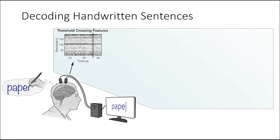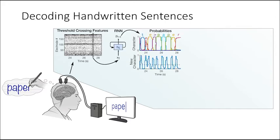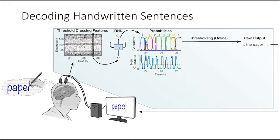Here's how our decoder works. We use multi-unit threshold crossing rates as features. A recurrent neural network decoder converts these into the probability of each character being written at the current time step. The probabilities can be thresholded to emit discrete characters, which we did for real-time use.